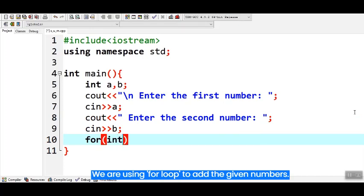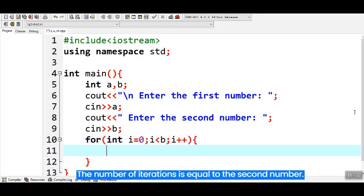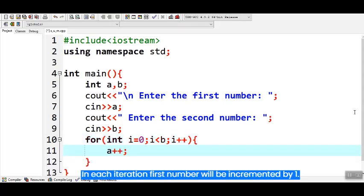We are using for loop to add the given numbers. The number of iterations is equal to the second number. In each iteration first number will be incremented by 1.